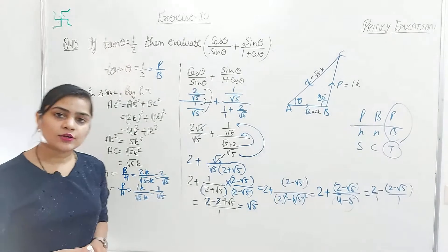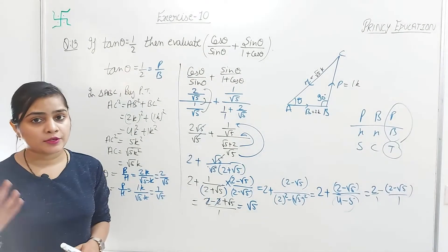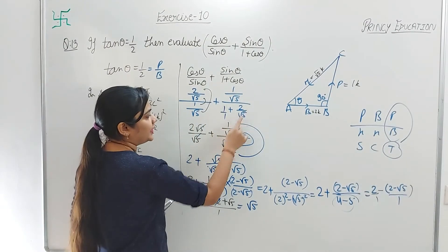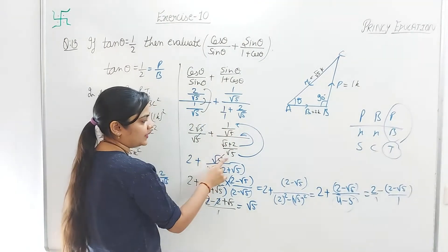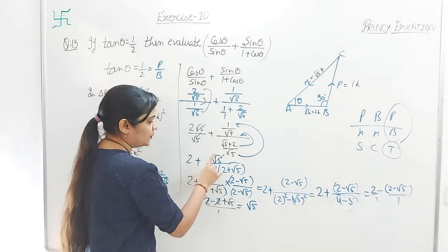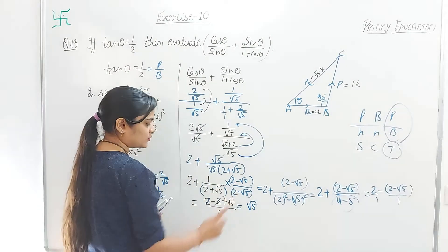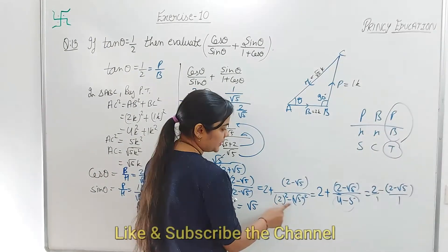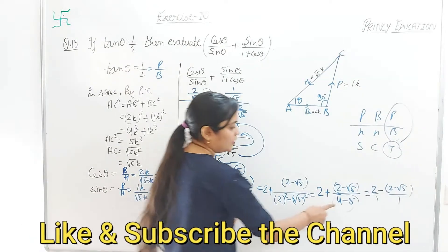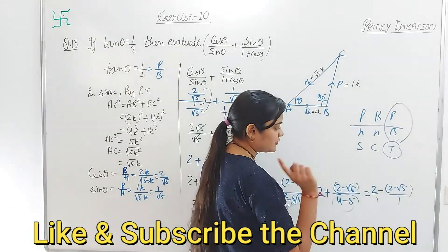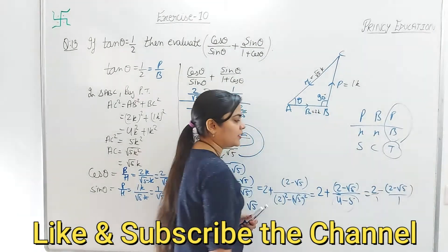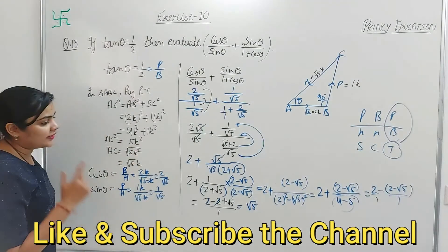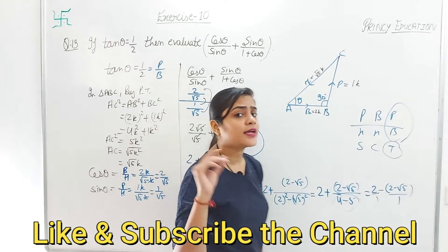So the answer is √5. This question is completely solved. To summarize: we multiplied to simplify, took LCM, got (2 + √5), then rationalized using the conjugate to get the (a² − b²) formula giving 4 − 5 = −1, so the final answer is √5. Question number 13 is completely solved.